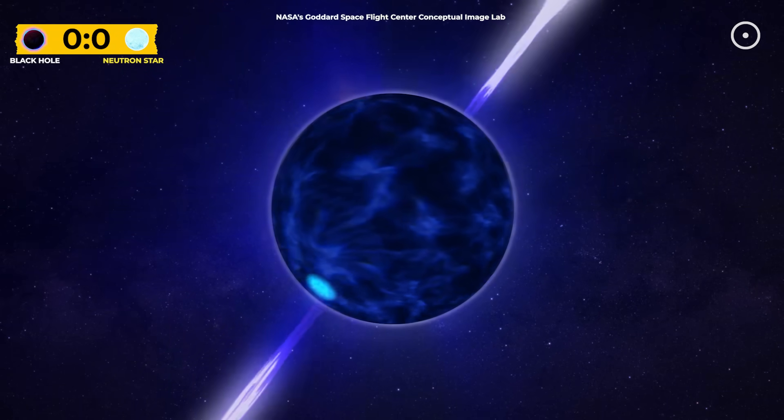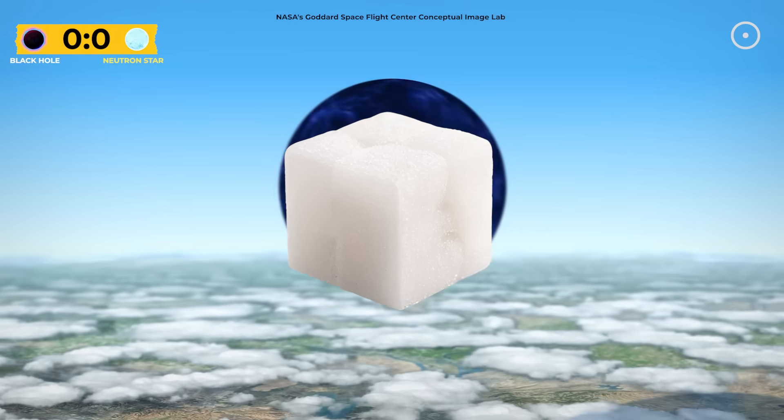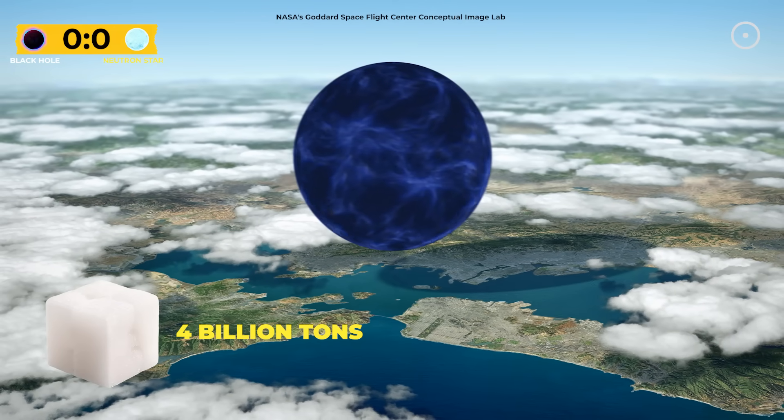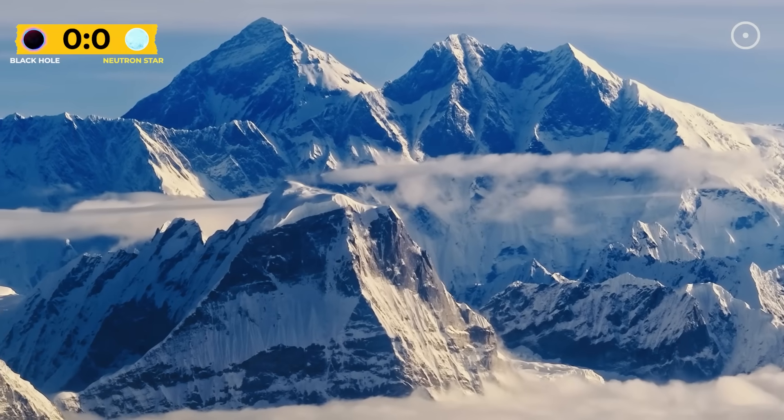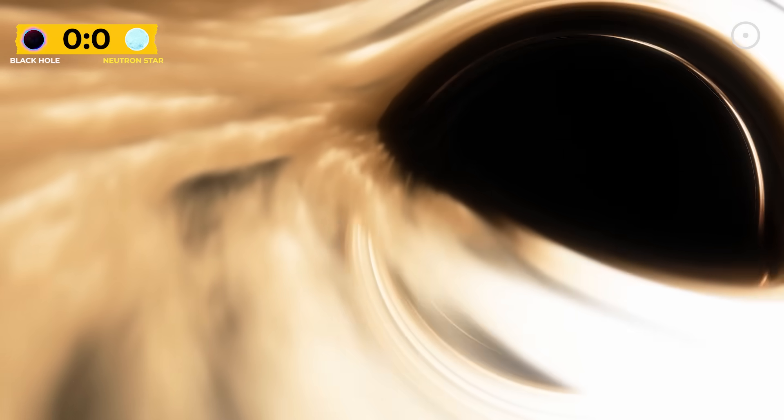Neutron stars? They're nothing to scoff at either. A sugar cube of neutron star material would weigh about 4 billion tons. That's like having Mount Everest compressed into a tiny cube. But even their incredible density can't match the gravitational monster that is a black hole.